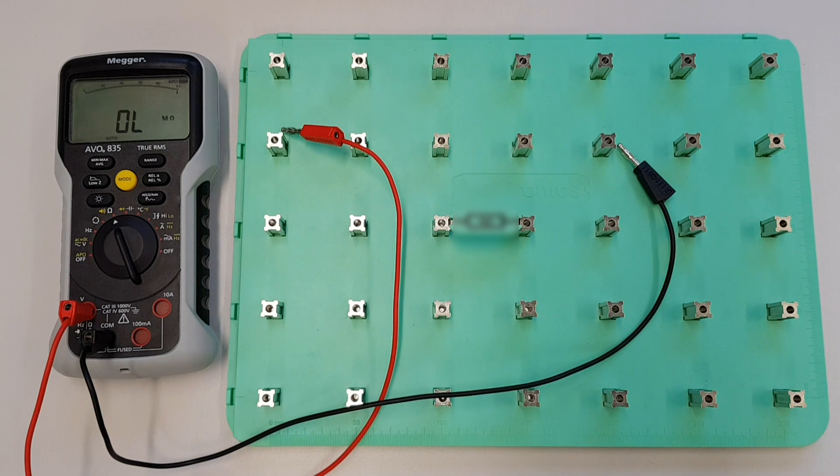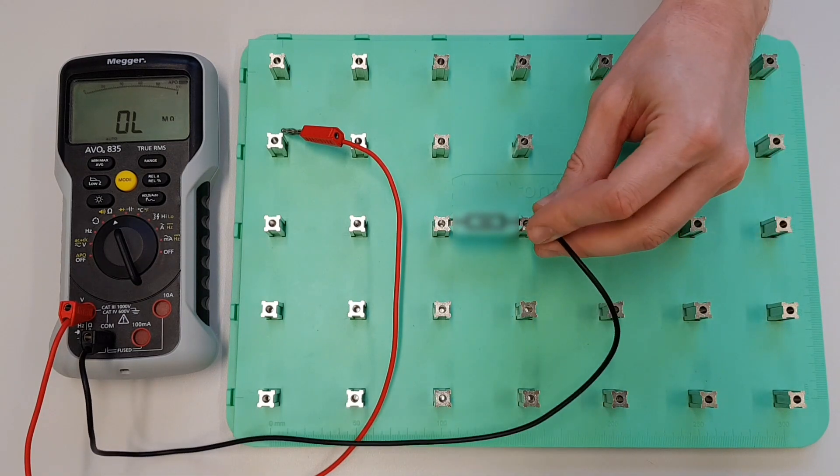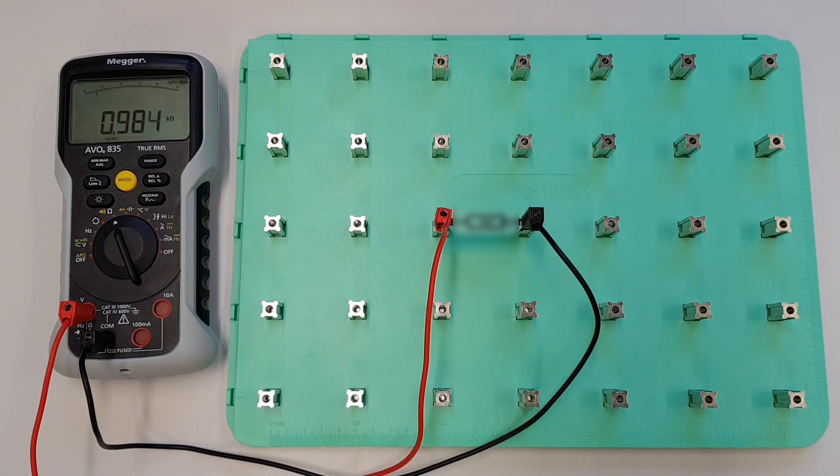We've got a mystery resistor value here. We're not sure what this is, but we're going to use our multimeter to measure that resistance and then we'll see if we can figure out what size of resistor it is. Let's hook this into the multimeter. On the multimeter now we can see it's auto ranging and now it's given us this value: 0.985.